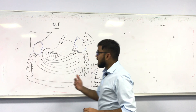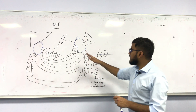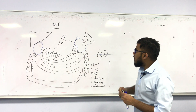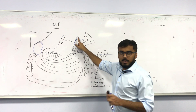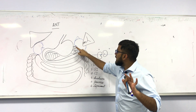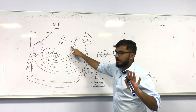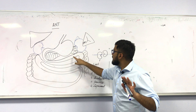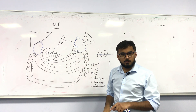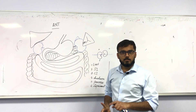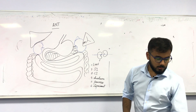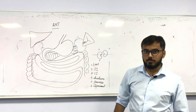Now for the anterior relations of the left kidney: suprarenal gland, spleen, pancreas, stomach, small intestine, and large intestine. I have notes which I will share with you.